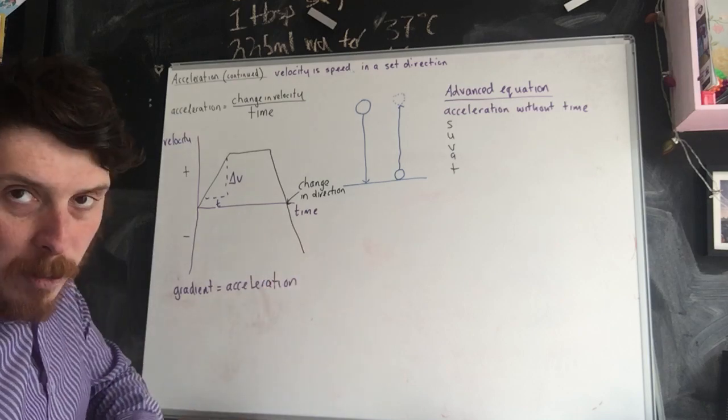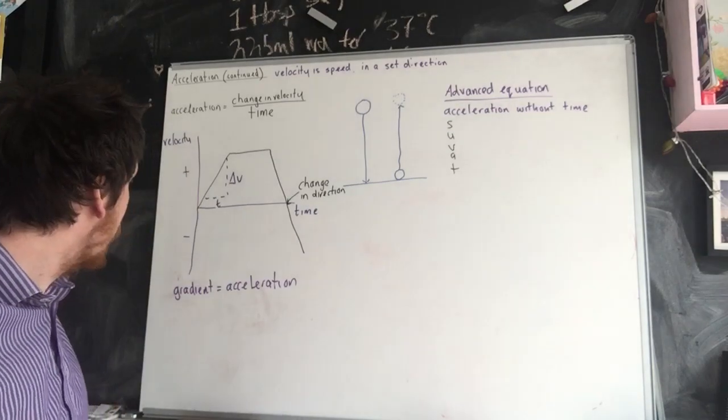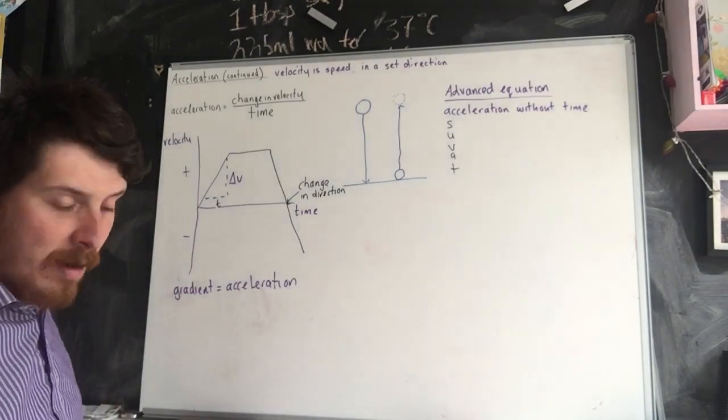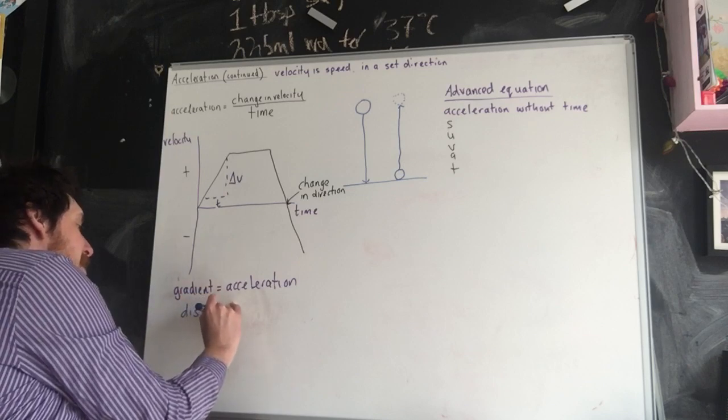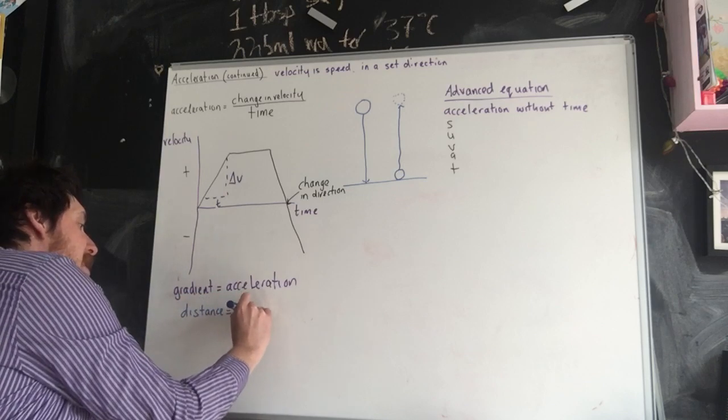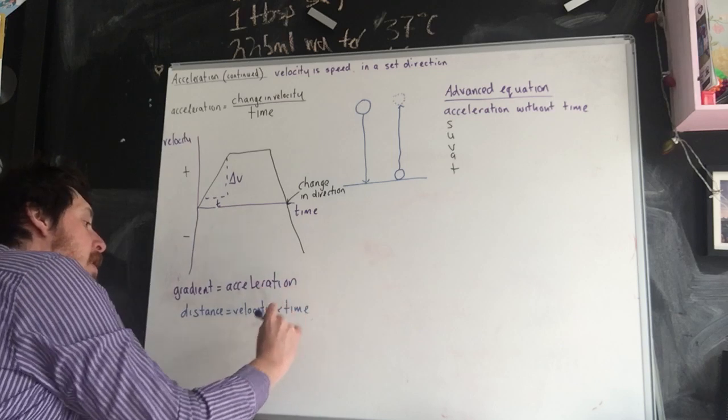The other thing that we could be asked to calculate is the distance that it's travelled. Now to calculate the distance that it's travelled, we need to take into account that distance is equal to velocity times time.